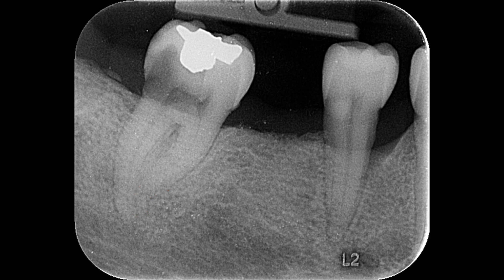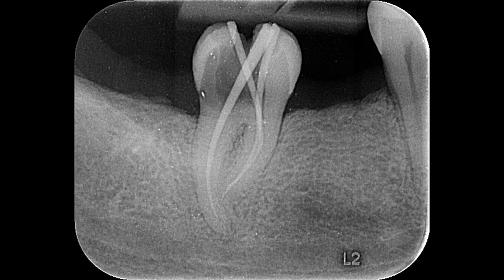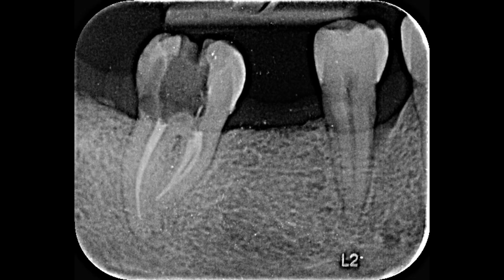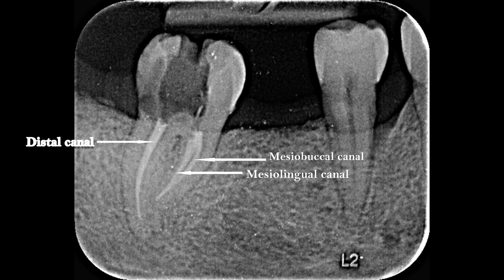After locating and preparing all three canals, let's see the working length radiograph. All three canals look very well prepared and shaped with good taper. And this is the final radiograph where you can see the three well-obturated canals — this is the mesial buccal canal, this is the mesial lingual canal, and this is the distal canal.